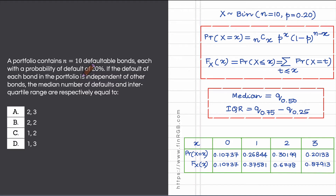In this video, let us do a solved example on the binomial distribution. We are given a portfolio which contains n = 10 defaultable bonds, each with a probability of default of 20%. The default of each bond can be assumed to be independent of other bonds, and the task is to calculate the median number of defaults and the interquartile range.